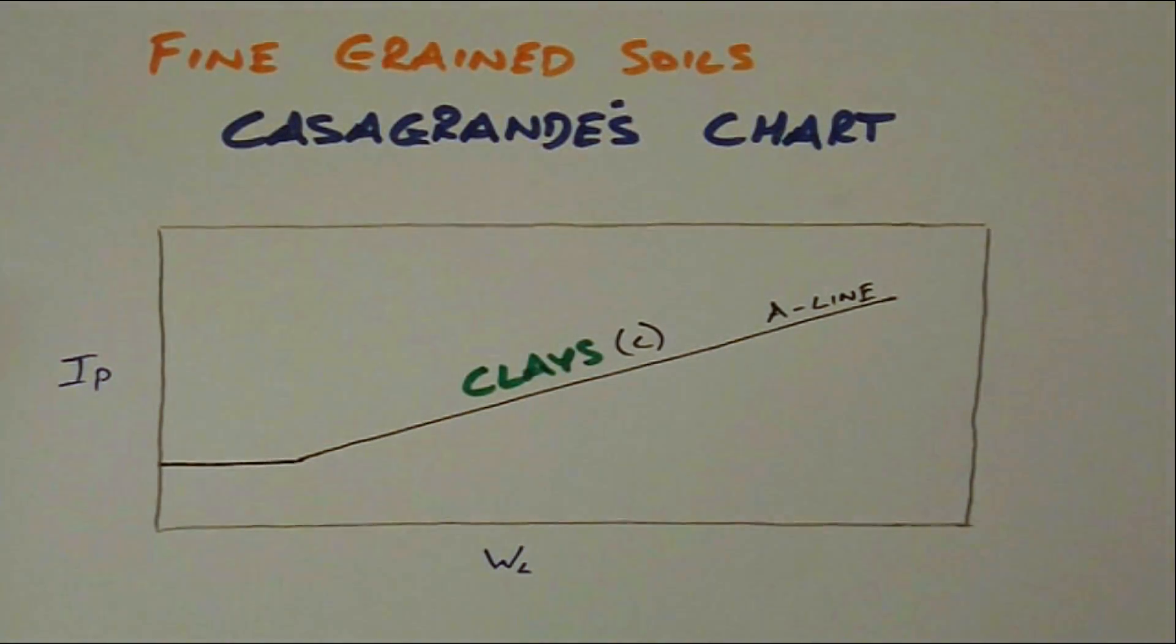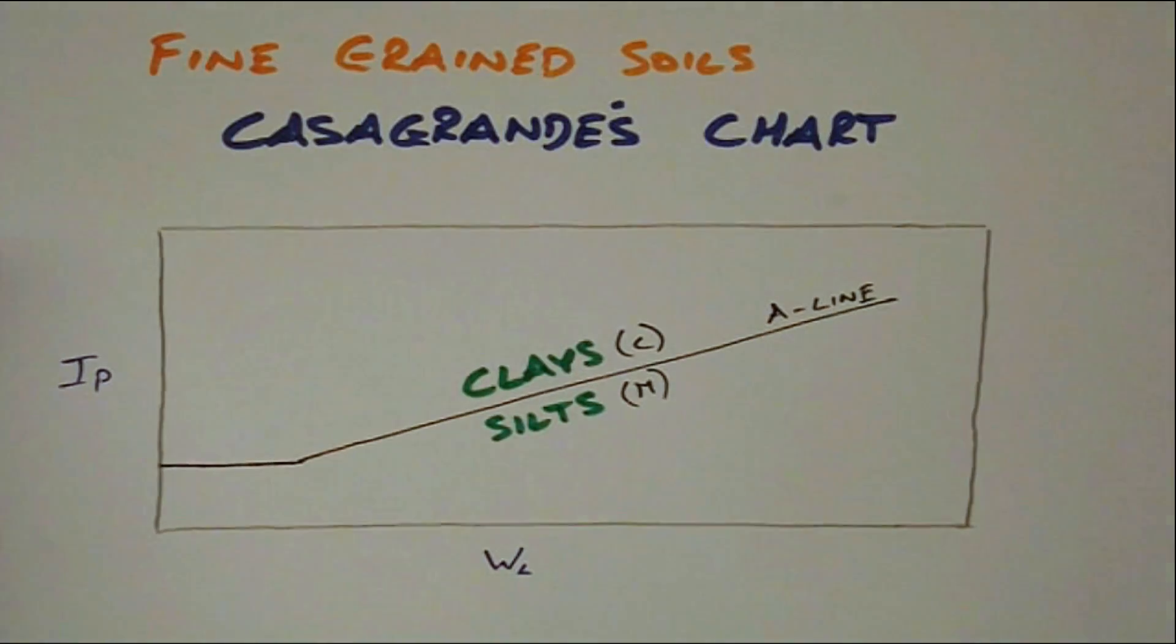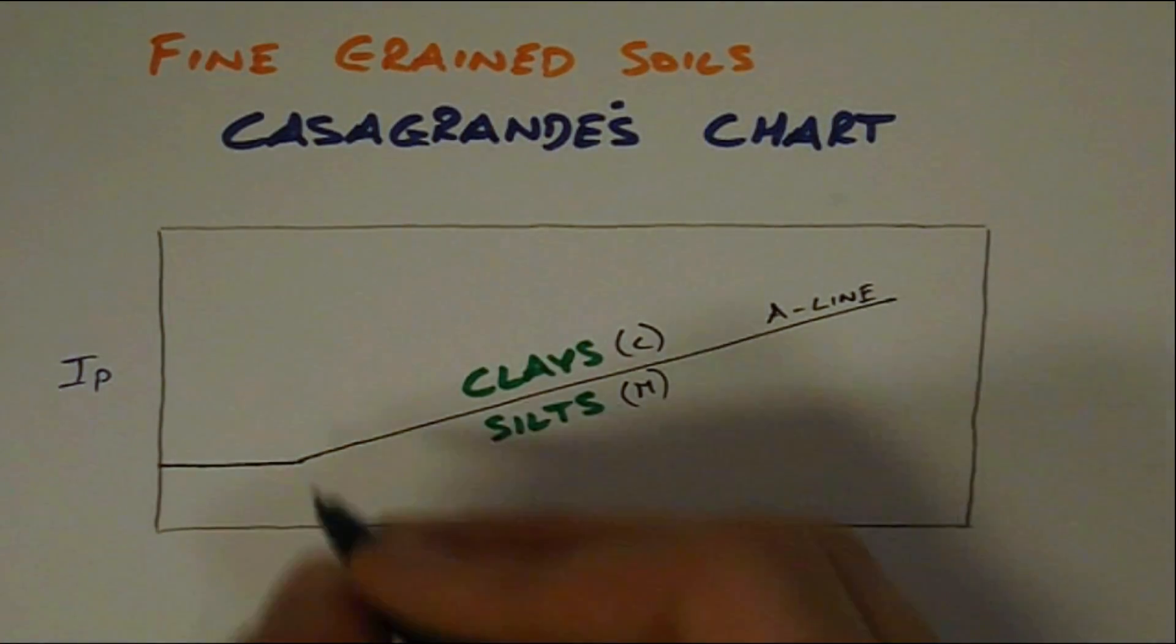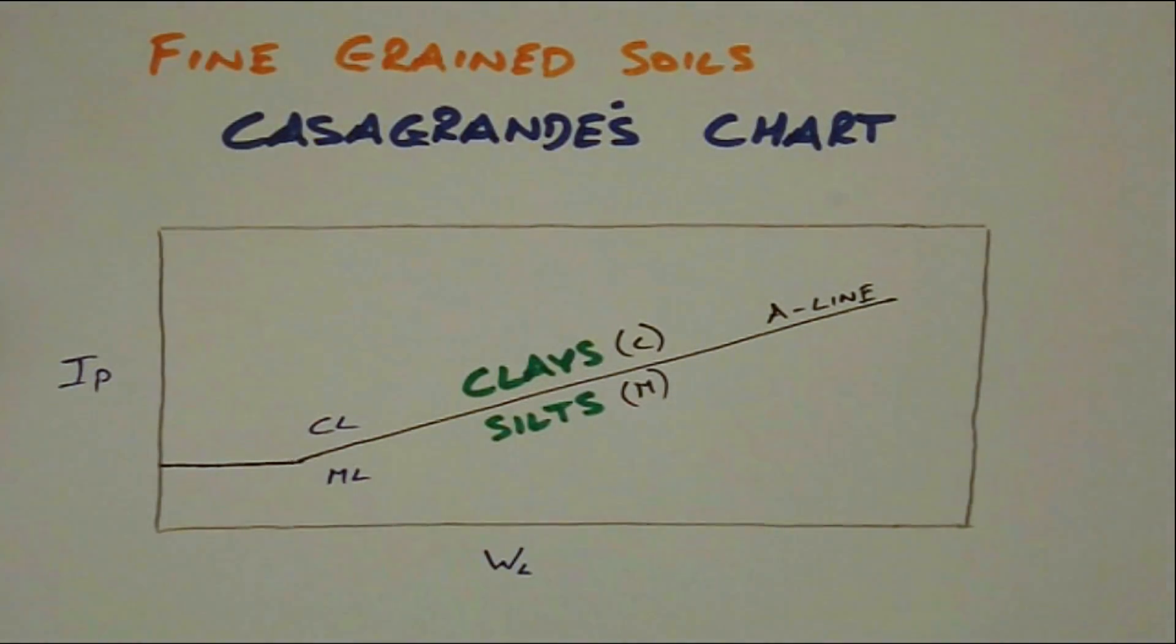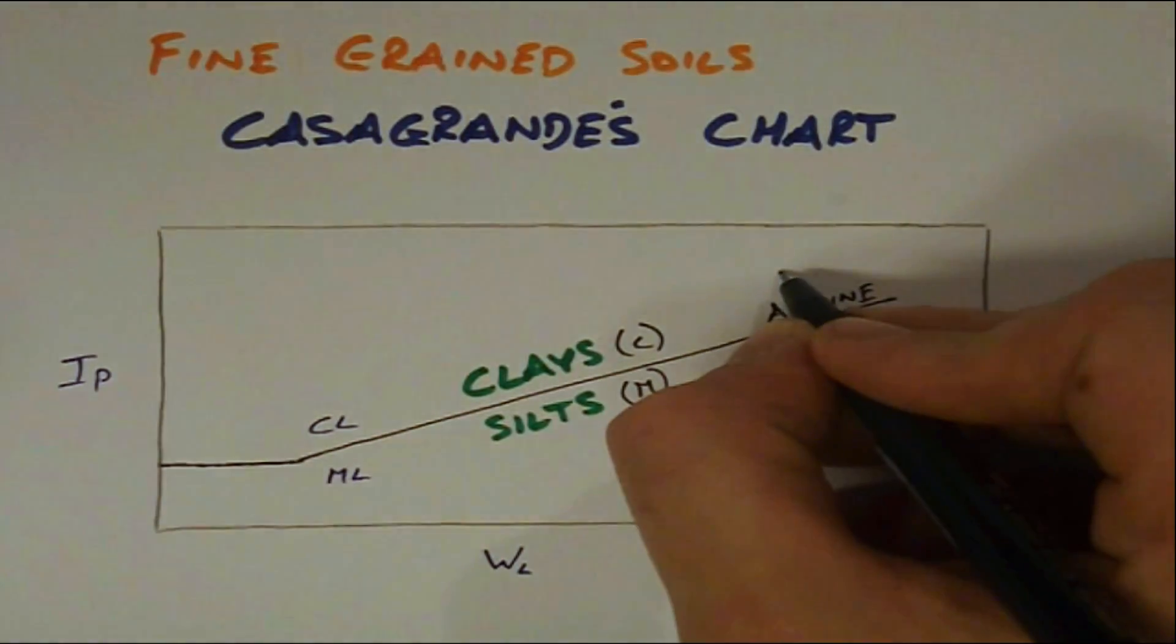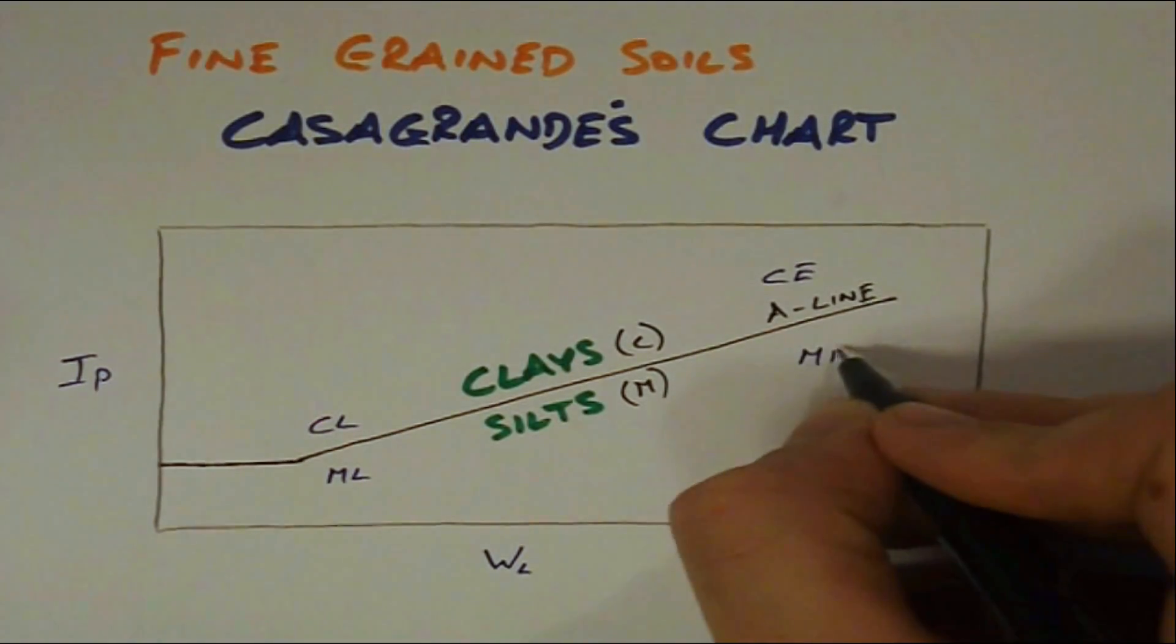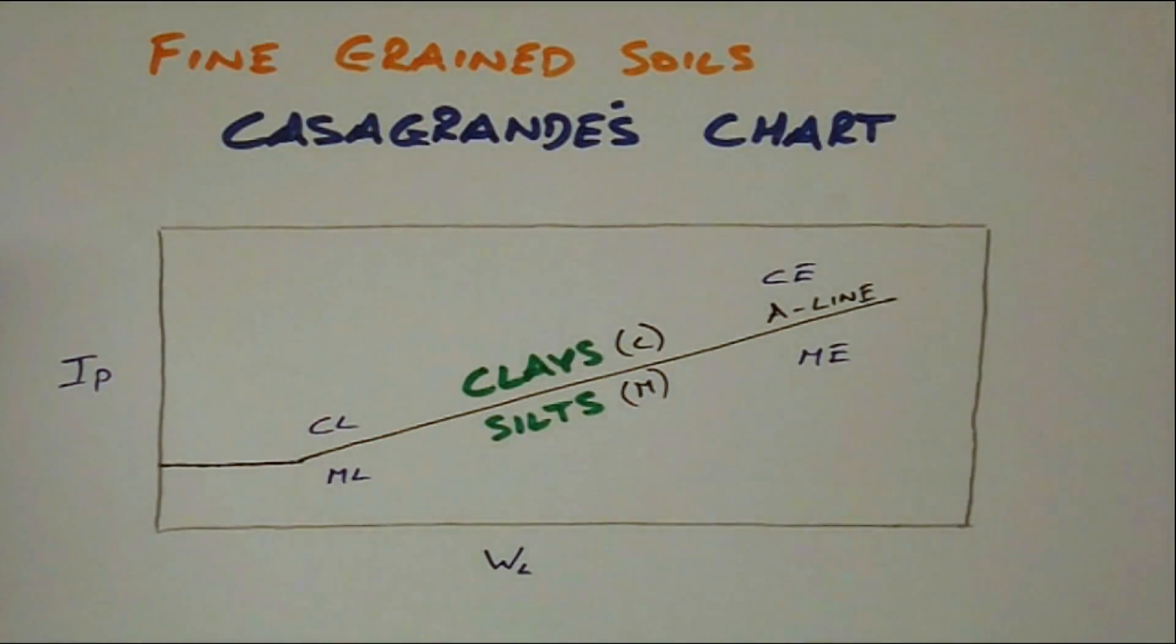Results falling below the A line indicate the soil as a silt designated by the letter M. The second letter following C or M indicates the degree of plasticity of the soil and this ranges from CL or ML for low plasticity materials to extreme plasticity materials in CE or ME soil types.